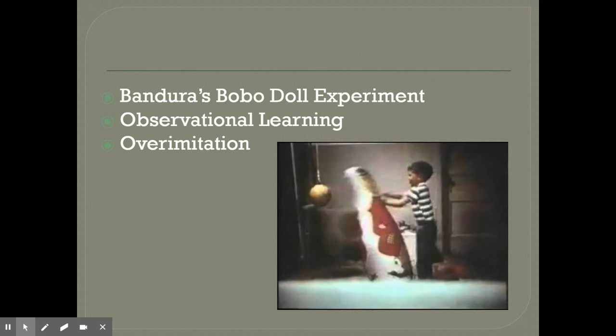Children are very susceptible to observational learning. In fact, some children even go as far as carrying out over-imitation. In an experiment done in Australia, they had a group of children watch parents drink from a glass, and every time they drank, the parent ran their finger down the glass — something obviously unnecessary for drinking. Yet when those children started drinking from the glass, they too ran their fingers down it. We call this over-imitation, where children not only replicate necessary actions but also unnecessary ones they've seen adults perform.